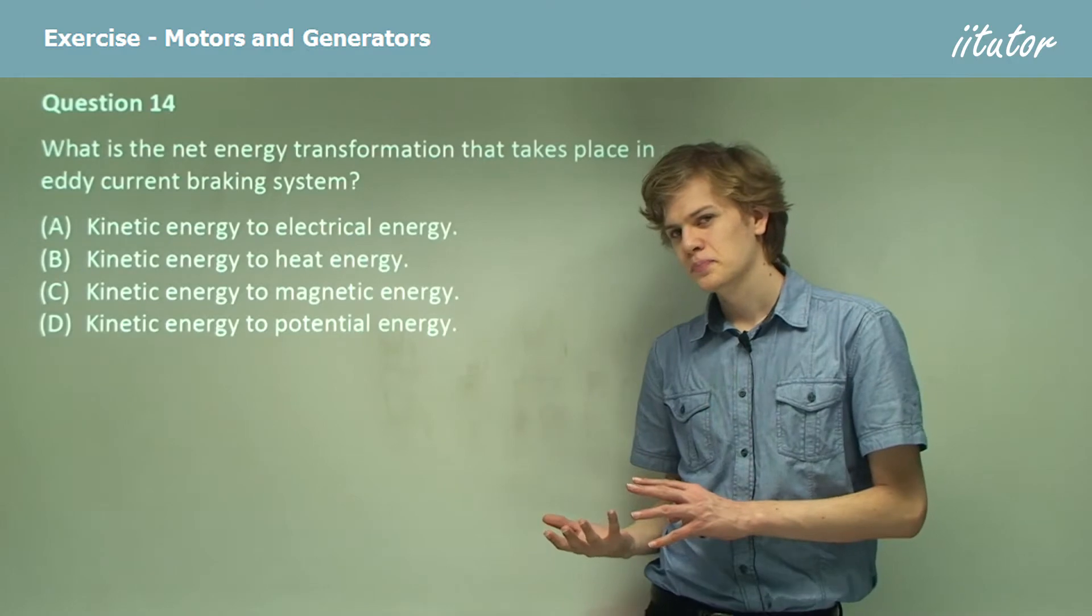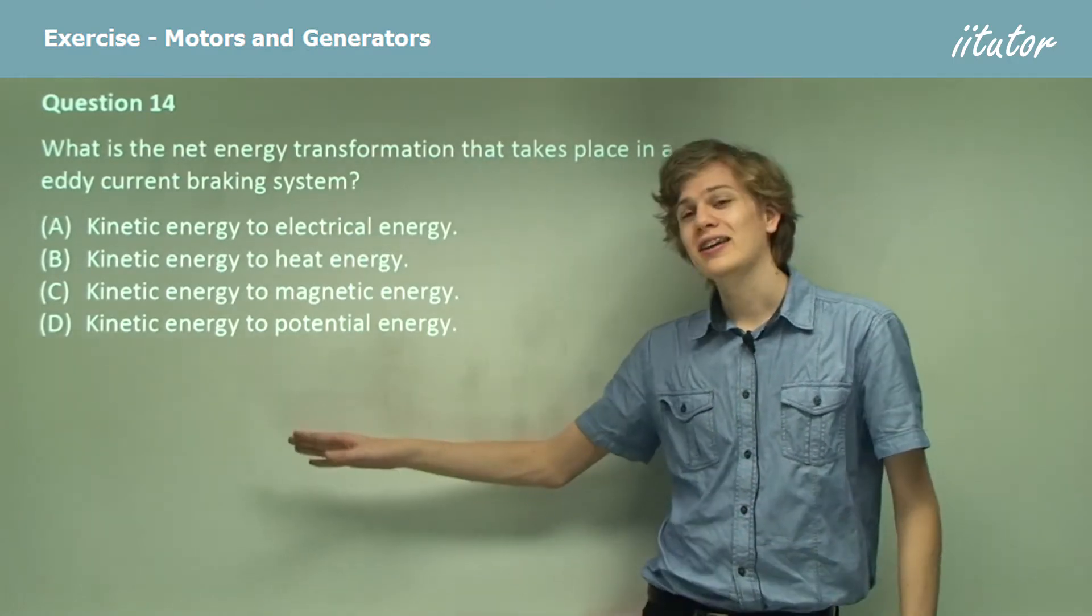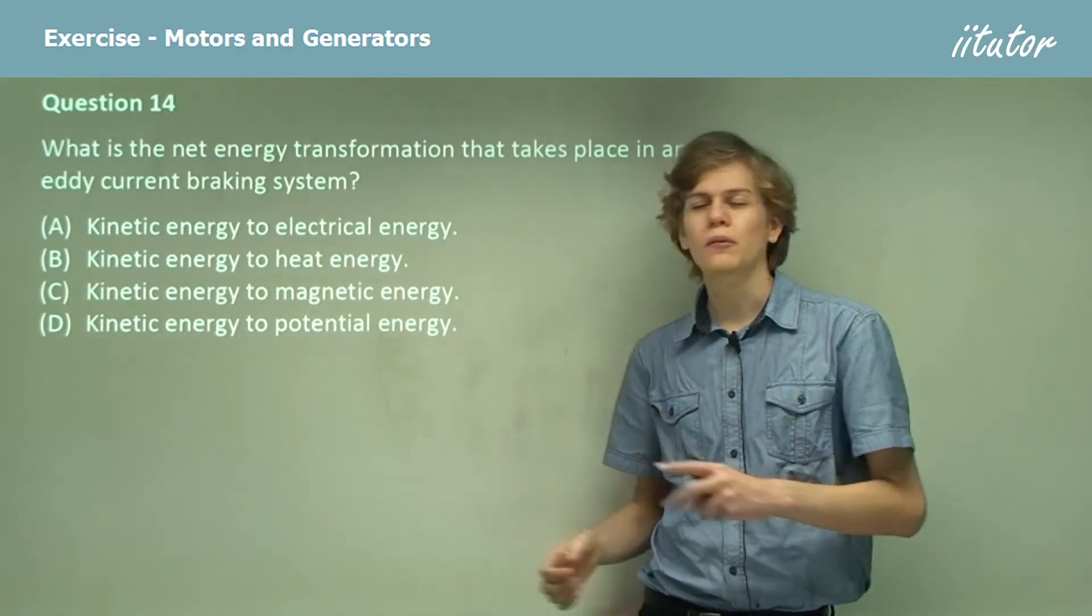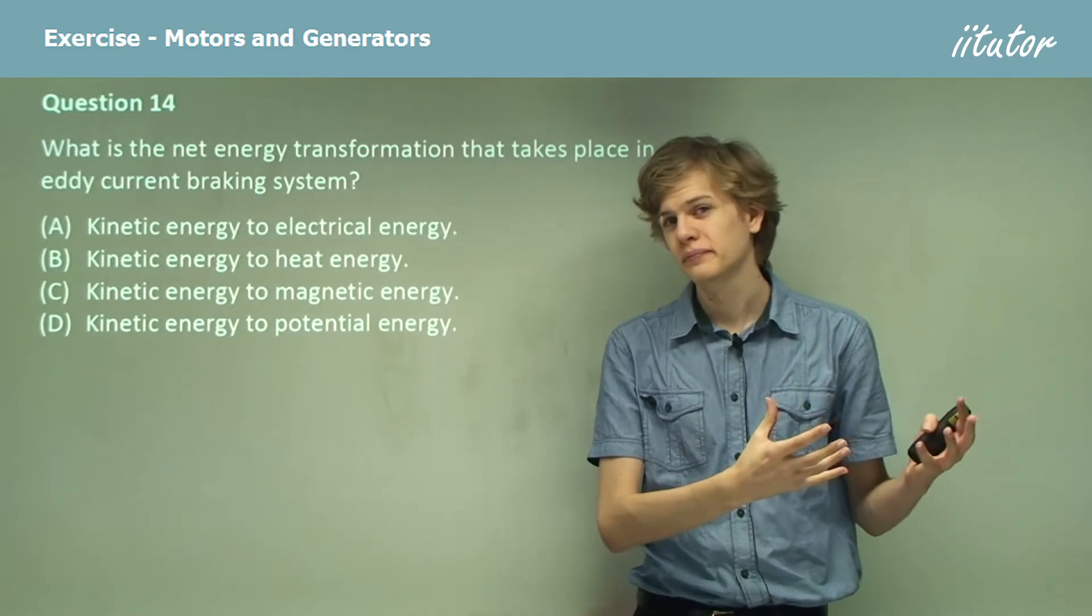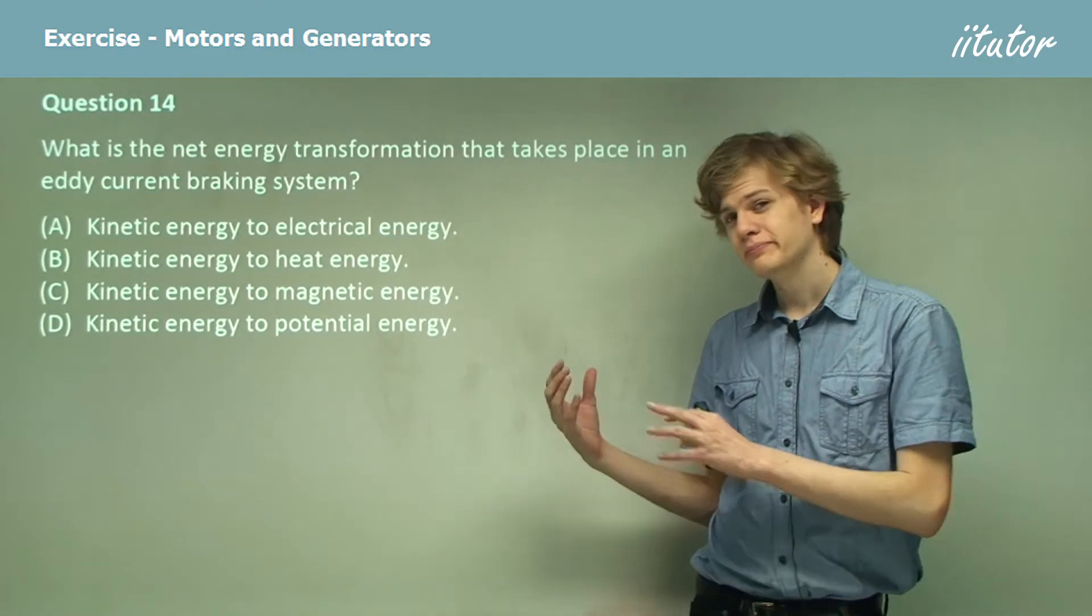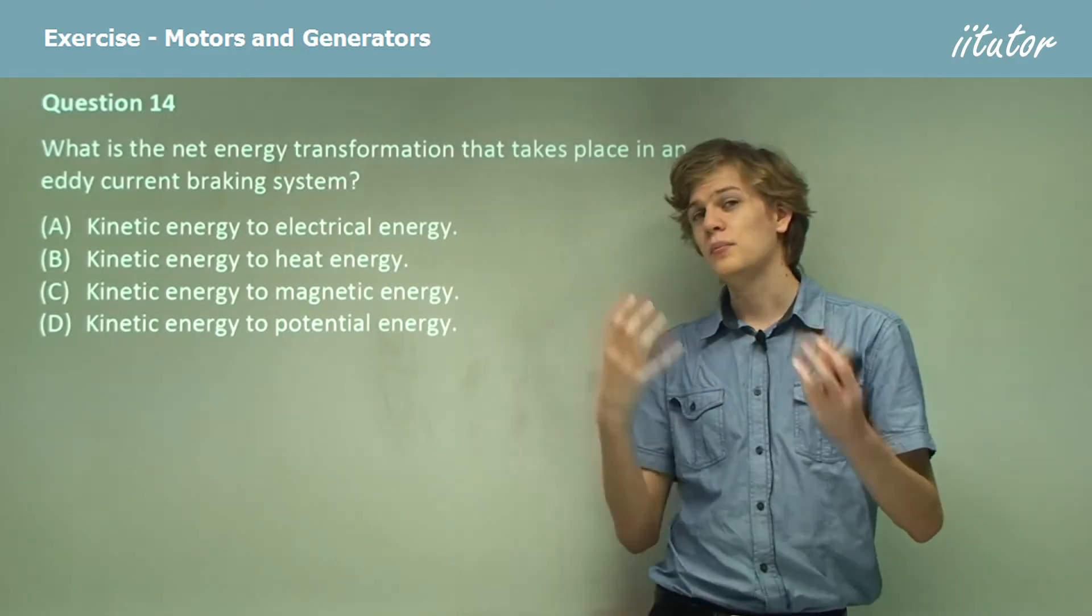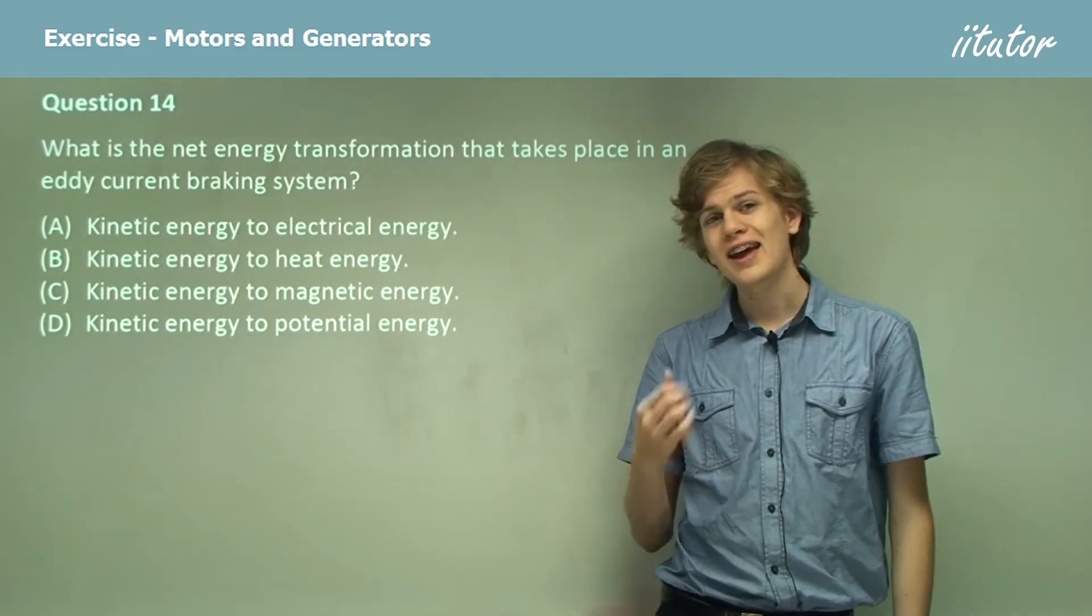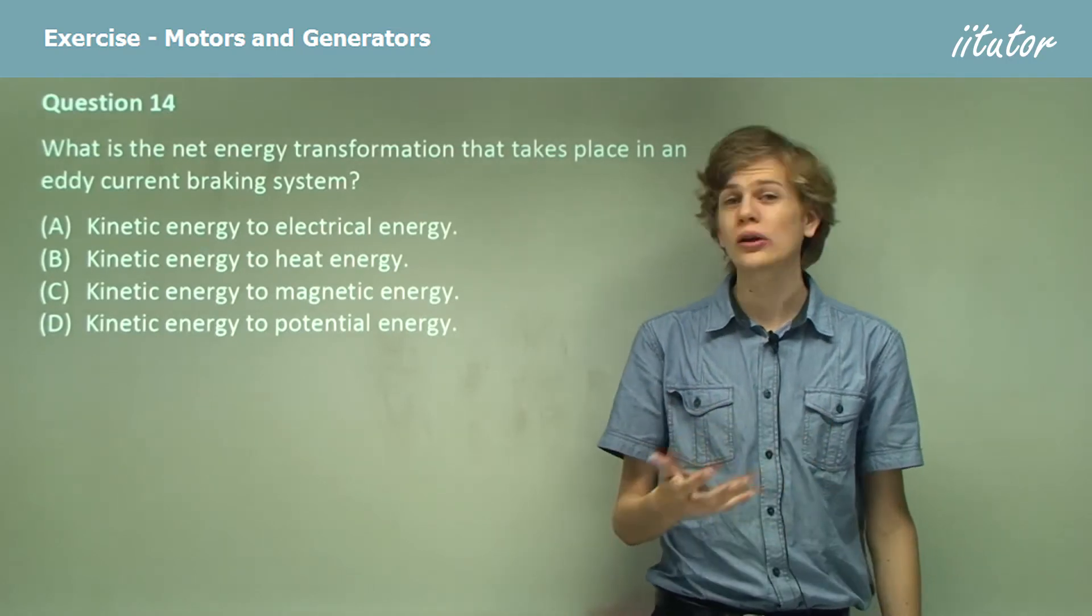So let's think about this. We obviously start with kinetic energy because we're starting with something moving and we're ending up with something stopped. Now, when the moving wheels pass through a magnetic field, then eddy currents will be produced that will slow the wheels down.